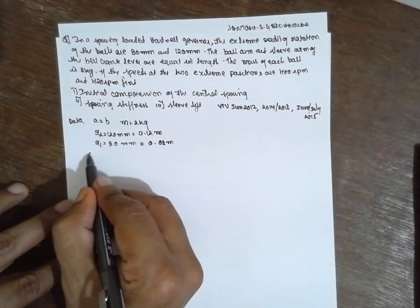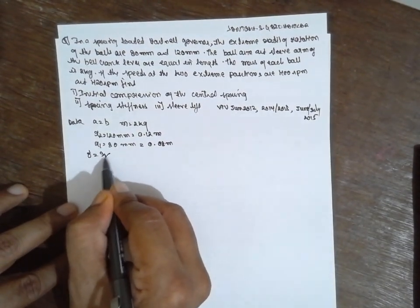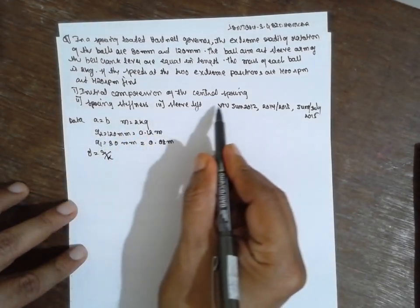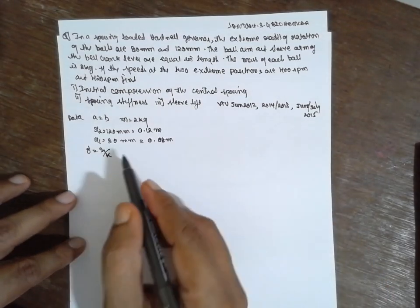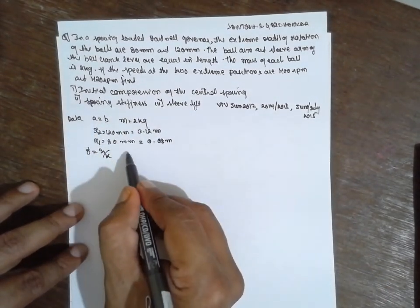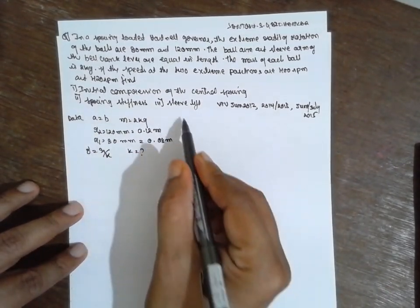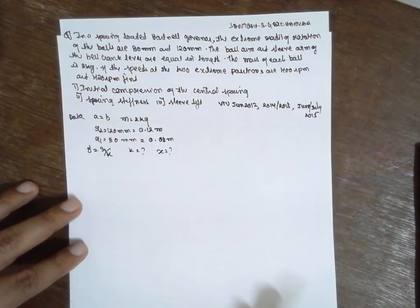Find initial compression that is delta. We have to find out that is S1 by K. Next of the central node is spring. Next is spring stiffness. We have to find out at what distance X the sleeve lift.